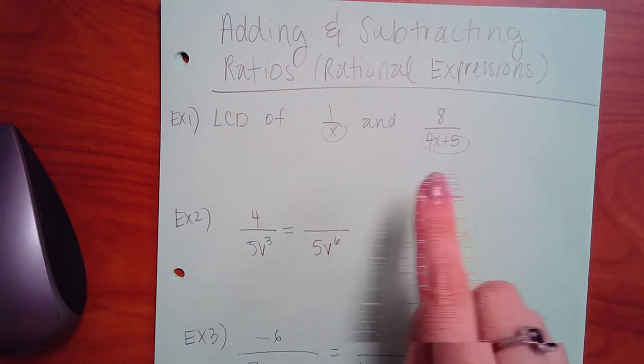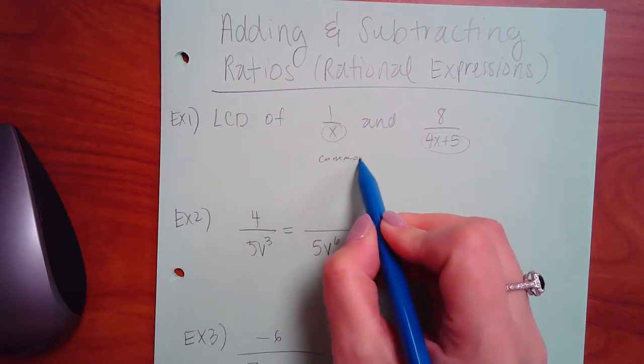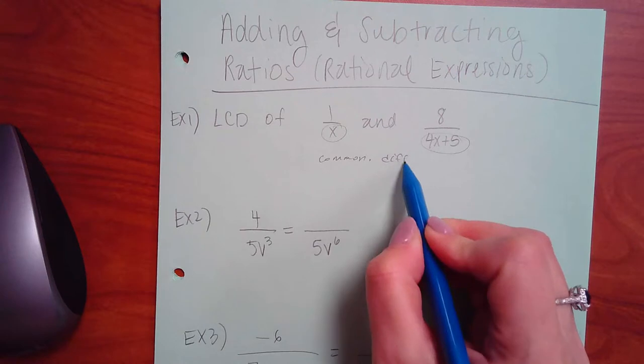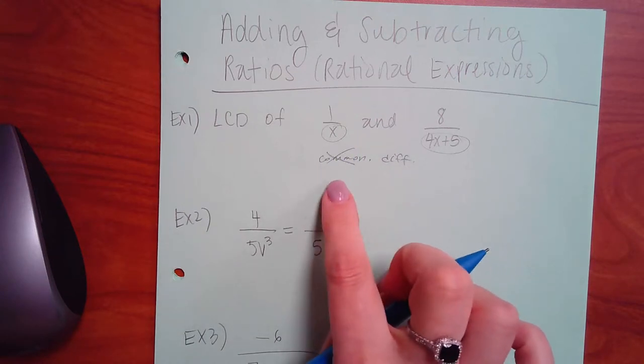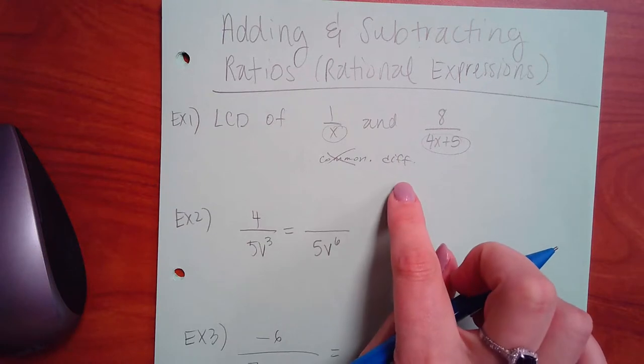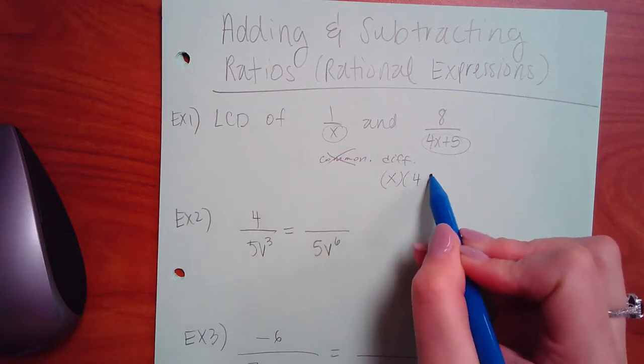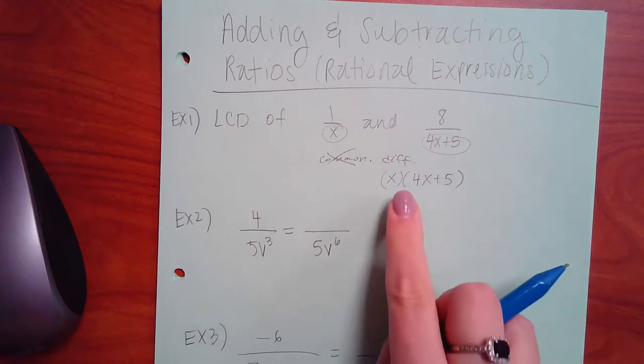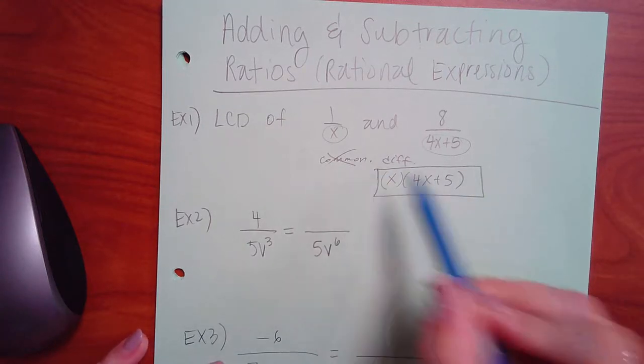So then you just ask yourself, what do they have in common and what do they have different? Well, they have nothing in common in this particular case. This one has a solitary x and this one has a 4x plus 5. So both of these factors would be included in my common denominator. So this is the answer. This is my common denominator.